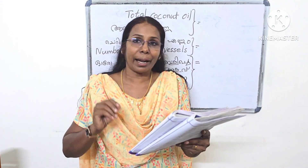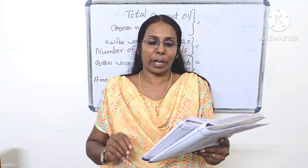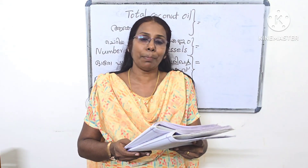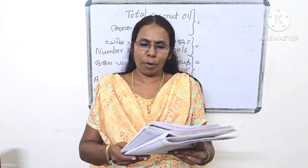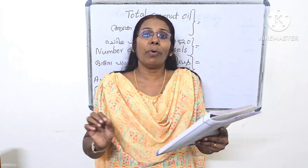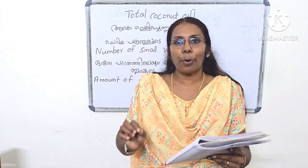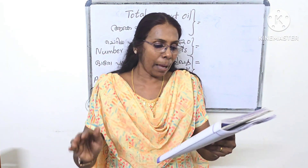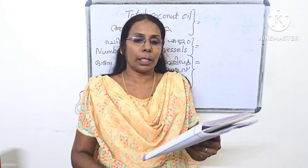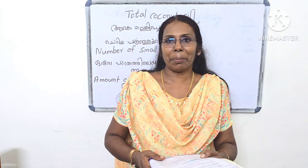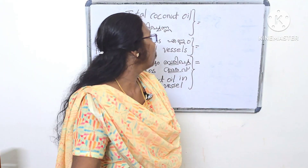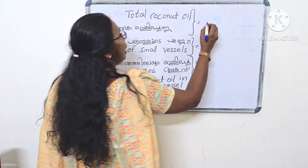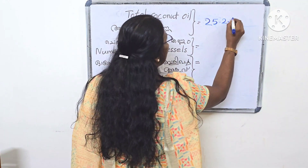A large vessel contains 25.2 liters of coconut oil. It was used to fill six small vessels of the same size. How much does each small vessel contain? That means in a small pot, there are 2.25 liters of water. This is the total coconut oil.